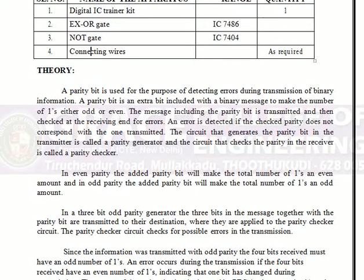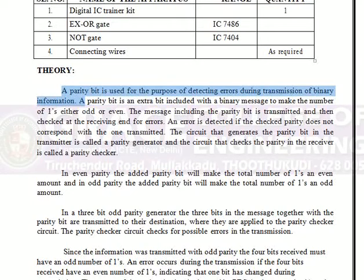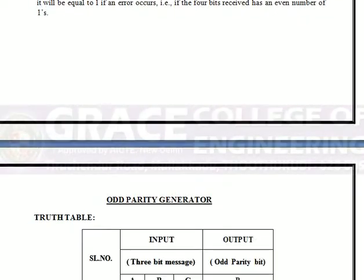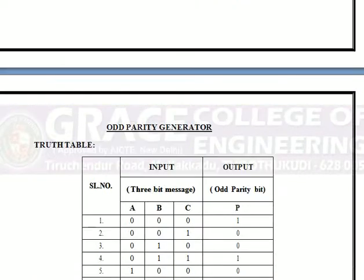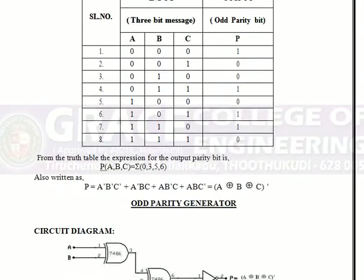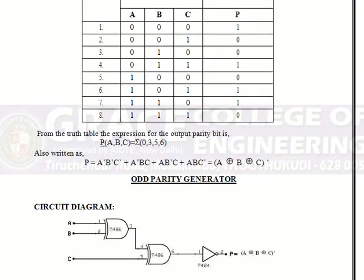This parity bit is used for the purpose of detecting errors during the transmission of binary information. We can detect any errors by using this parity bit. This is the truth table of the odd parity generator — 3 bits and the output. This is the circuit diagram for the odd parity generator.